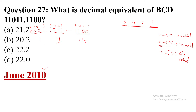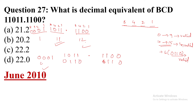Since both groups are invalid, we add 0110 to each invalid group. So 1101 becomes 10011 and the other group is corrected similarly. For the fractional part, 1100 and 0000 — the 0000 group is valid so we simply add 0000 to it.